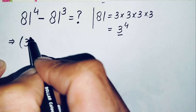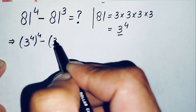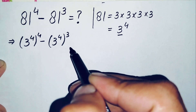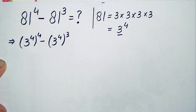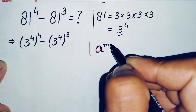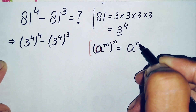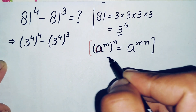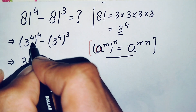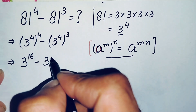This will become 3 raised to power 4, all raised to power 4, minus 3 raised to power 4, all raised to power 3. Now in these two terms we use the exponential property: a raised to power m, all raised to power n, equals a raised to power m times n. Multiplying the powers gives us 3 raised to power 16 minus 3 raised to power 12.